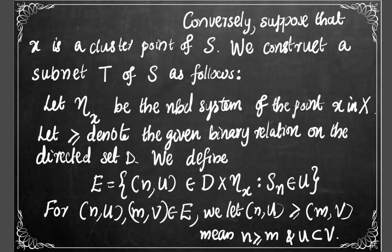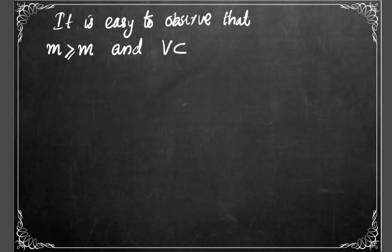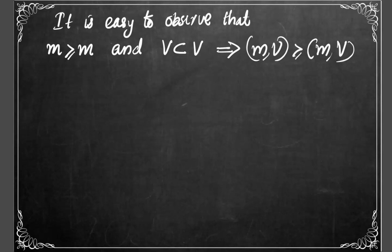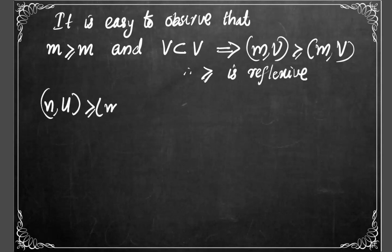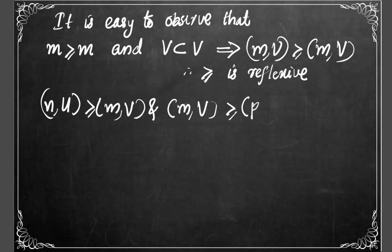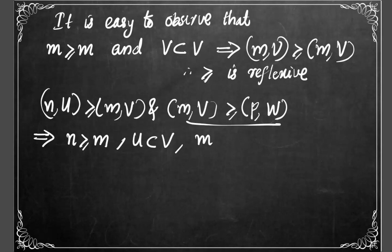Let (n, U) follows (m, V) mean that n follows m and U ⊆ V. We first claim that this binary relation makes E a directed set. It is easy to observe that since m follows m and V ⊆ V itself, (m, V) follows (m, V), so this relation is reflexive. If (n, U) follows (m, V) and (m, V) follows (p, W), then by definition n follows m, U ⊆ V, m follows p, and V ⊆ W.